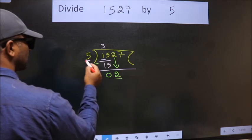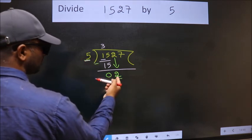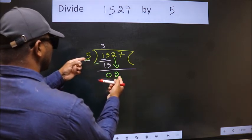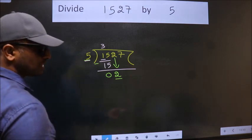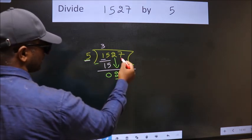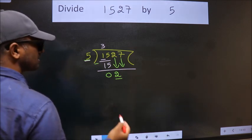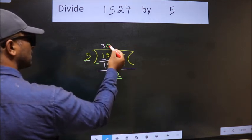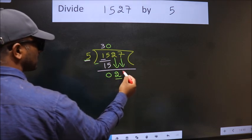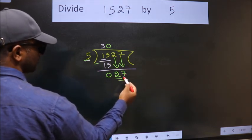Here we have 2. Here 5. 2 is smaller than 5. So we should bring down the second number. And the rule to bring down second number is put 0 here. Then only we can bring this number down. So 27.